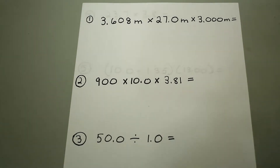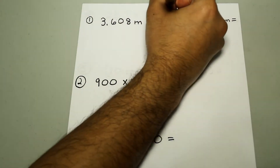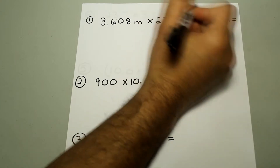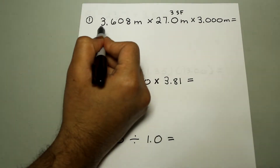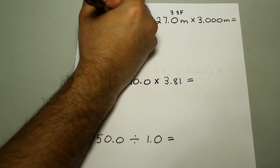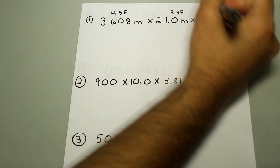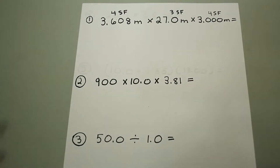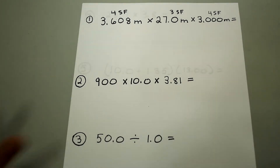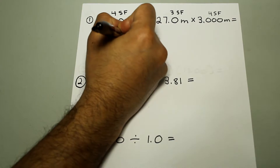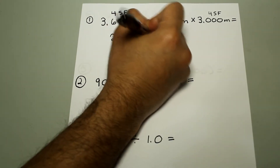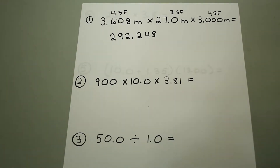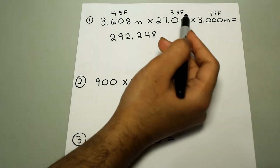What I like to do is write how many significant figures each factor has — I just write it on top. So 27.0 has three significant figures and that's the lowest. The first one, 3.608, has four significant figures, and 3.000 also has four significant figures. So we're just going to multiply without paying attention to significant figures first. That gives us 292.248. At this point we identify how many significant figures the answer needs to have — three significant figures.